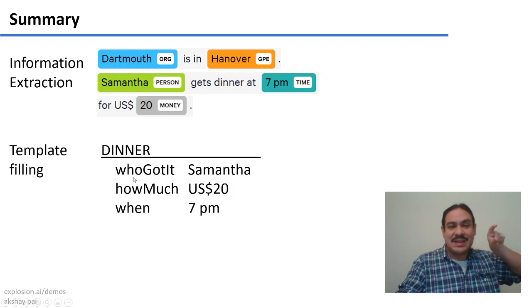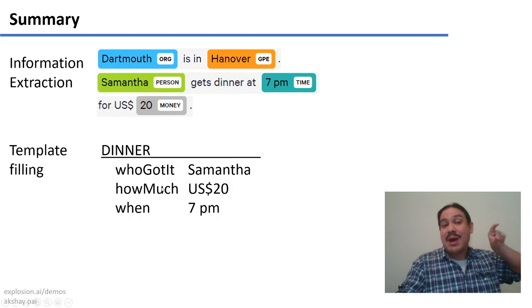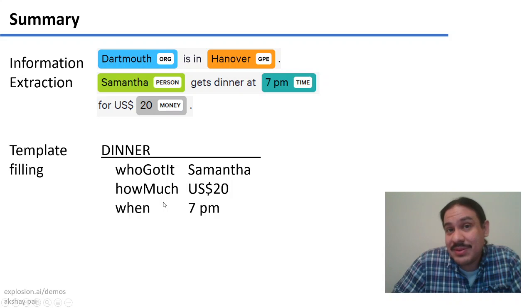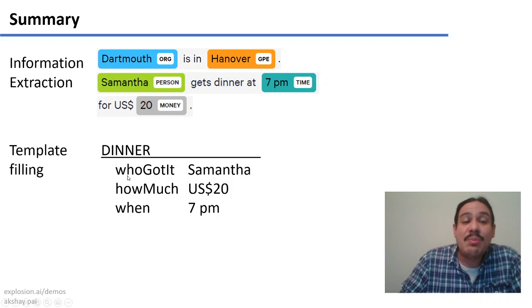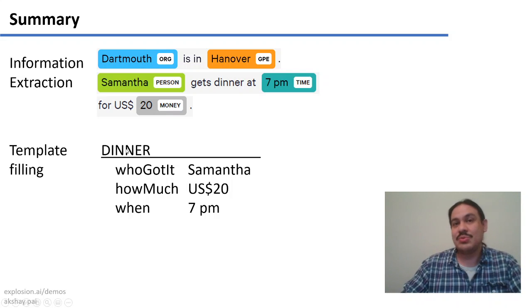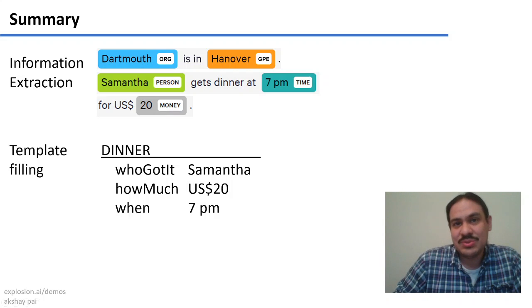and then make a regular expression that extracts the word Samantha and puts it here. How much was dinner? Get a regular expression that finds a money expression and puts it here. And of course, again, think about the things we spoke about this week. Someone has to decide what are the attributes that describe dinner. And this will be true for any entity that you describe in this way.